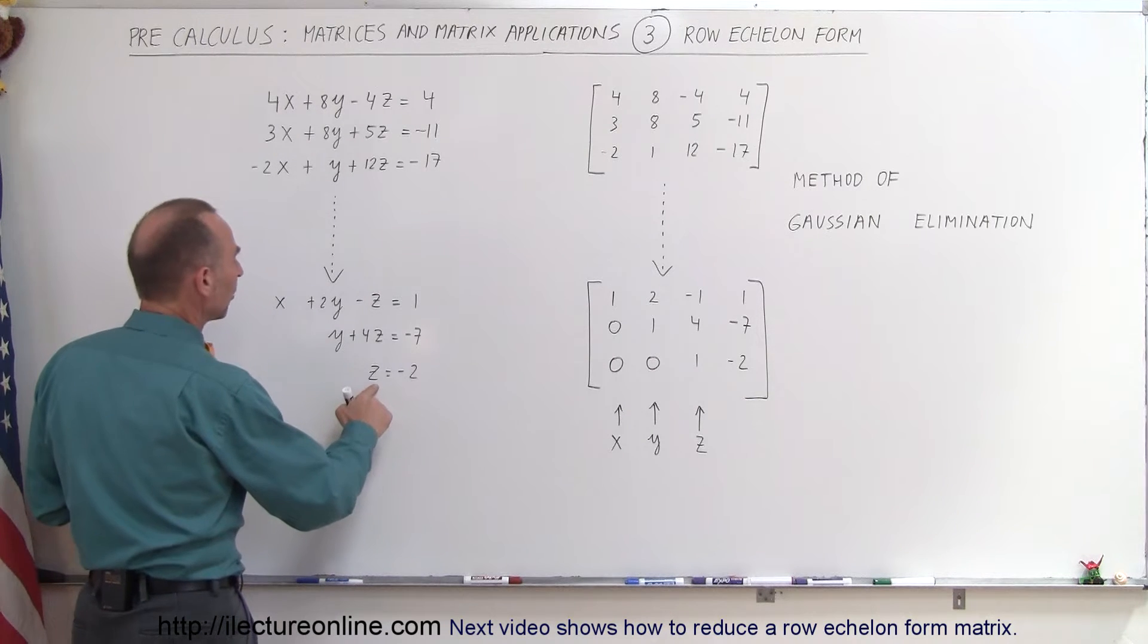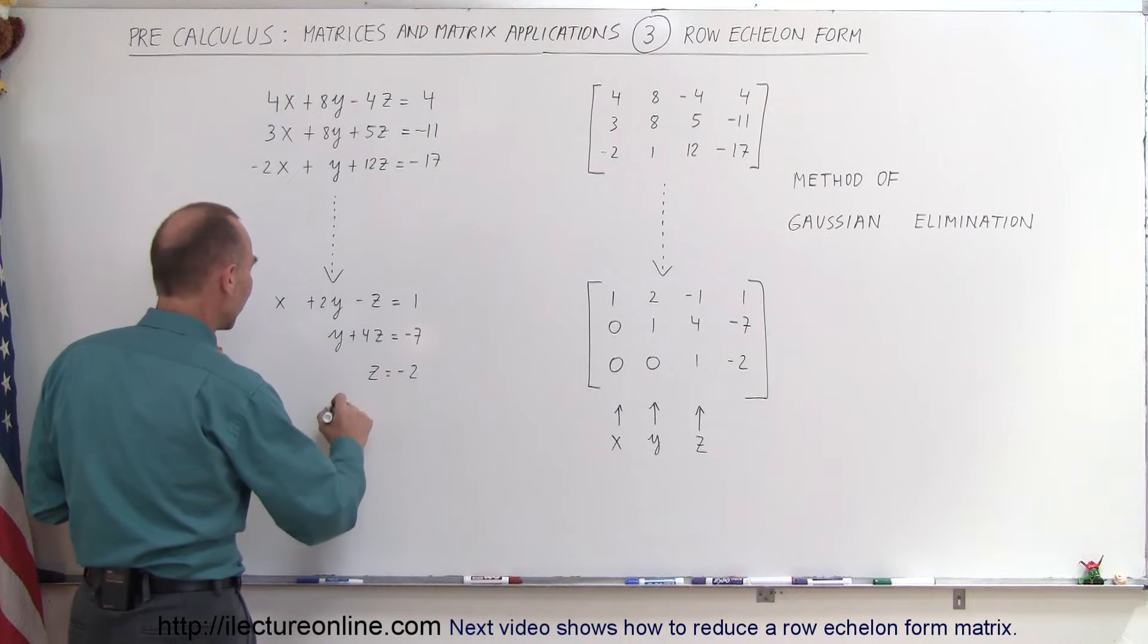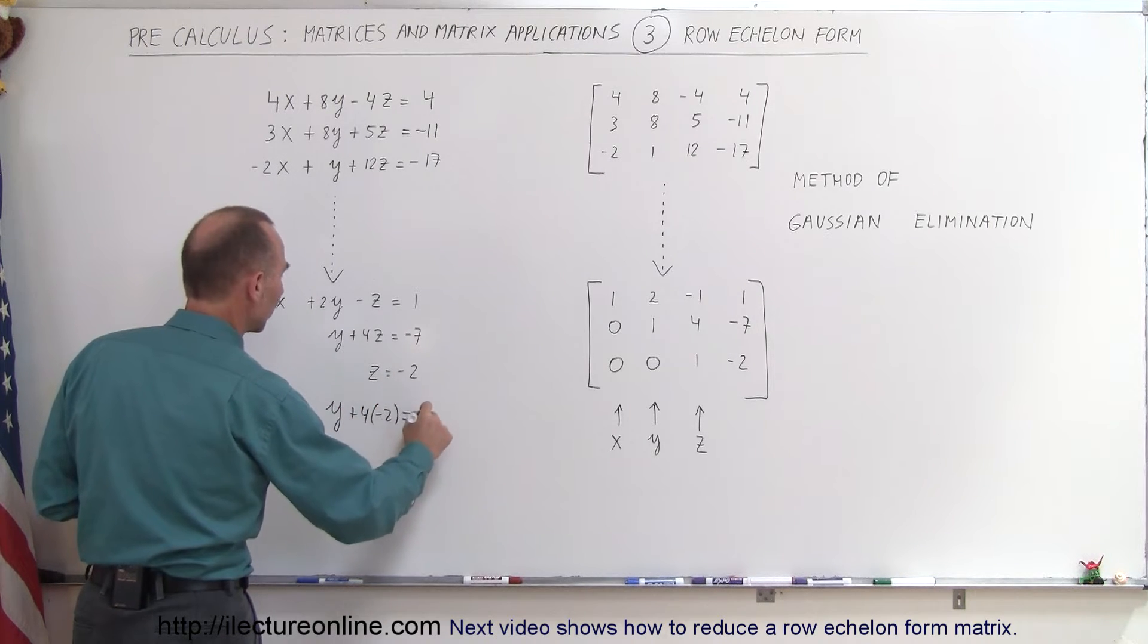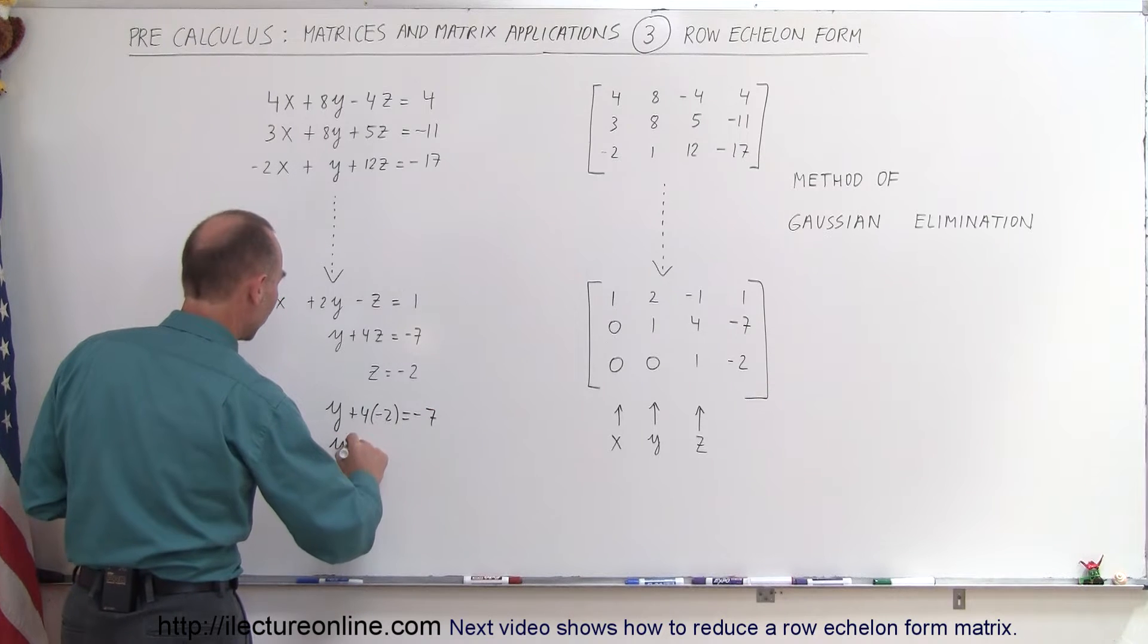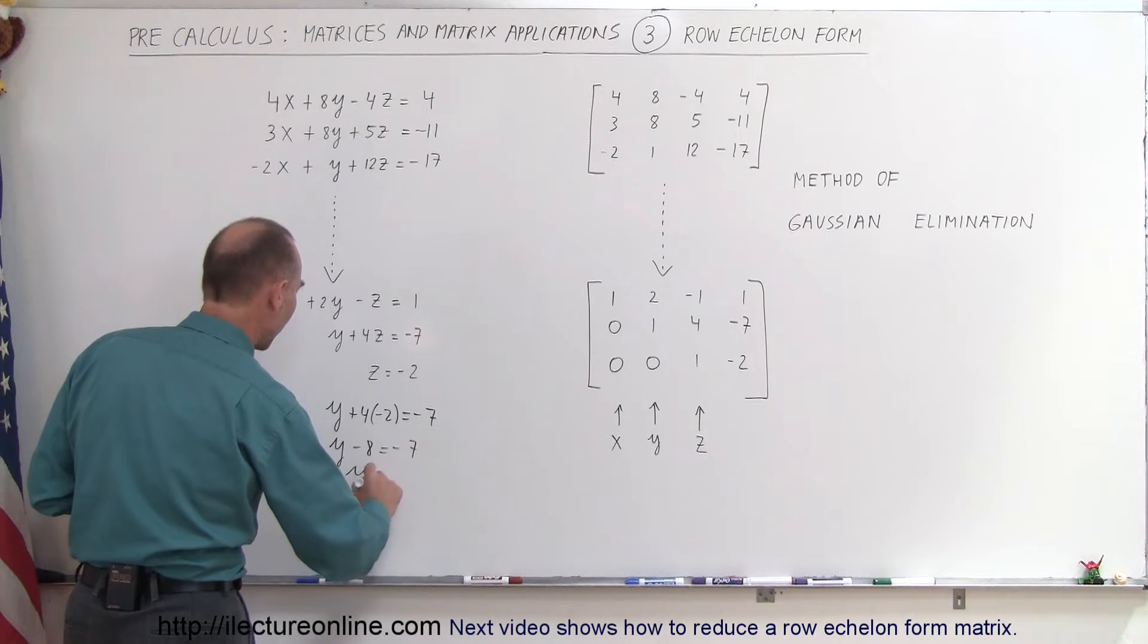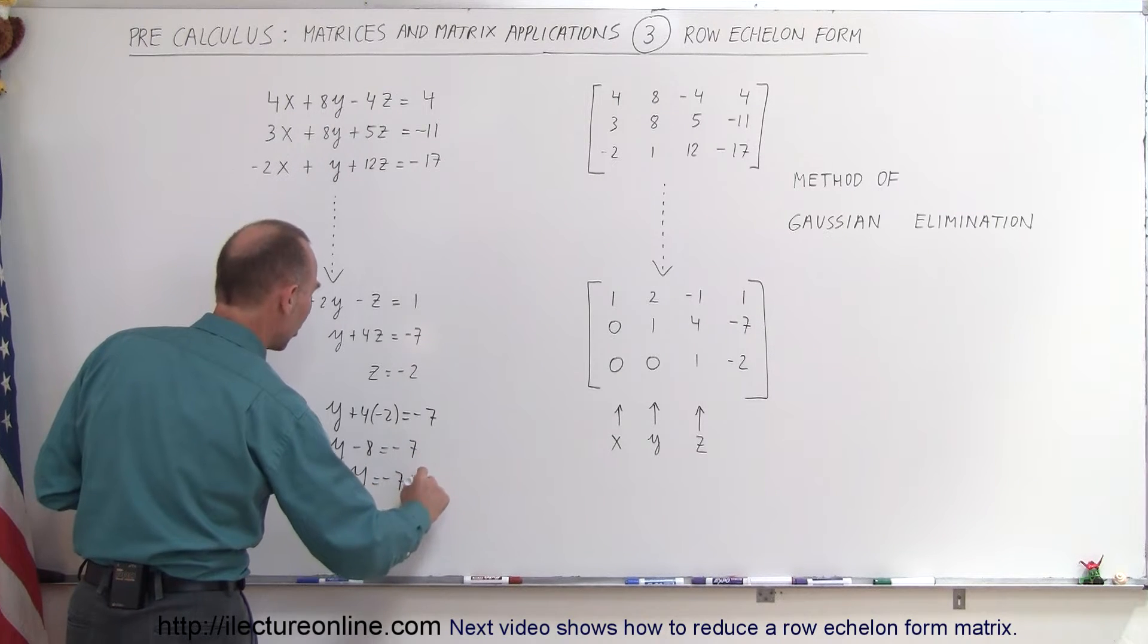So, for example, once we know that z is equal to negative 2, we can then say that y plus 4 times negative 2 is equal to negative 7, so y, that would be minus 8, equals negative 7, and if I put the negative 8 to the other side, we get y equals negative 7 plus 8, or y equals 1.